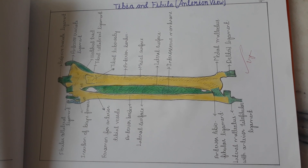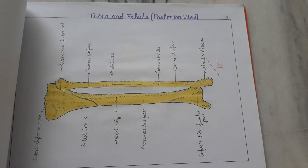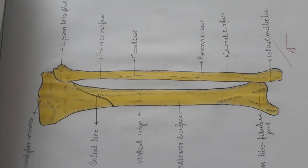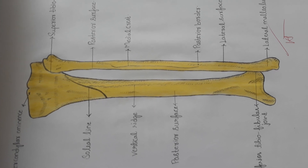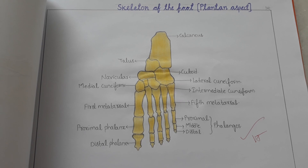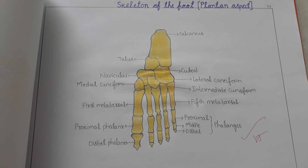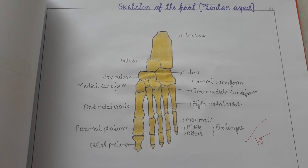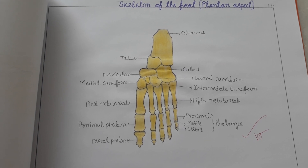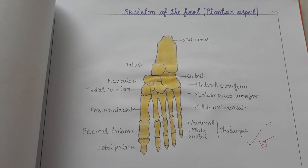This is the tibia and fibula — anterior view and posterior view. This is the skeleton of the foot — plantar aspect. Any part of this can be given as a spotter.